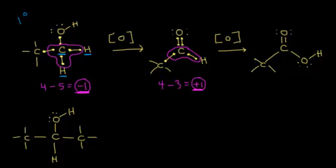Let's look at the oxidation state of the carbonyl carbon in the carboxylic acid. I put in my electrons and think about electronegativity: oxygen beats carbon, tie between the two carbons, and oxygen beats carbon again. In this case, normally four valence electrons — now there's one. So four minus one gives us an oxidation state of plus three. An increase in the oxidation state means oxidation. If you oxidize an aldehyde, you will get a carboxylic acid.